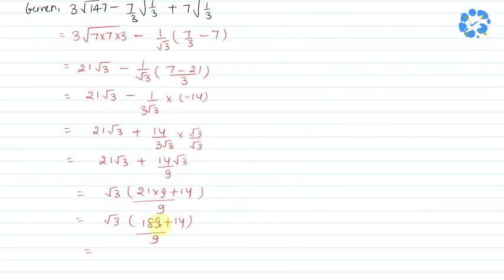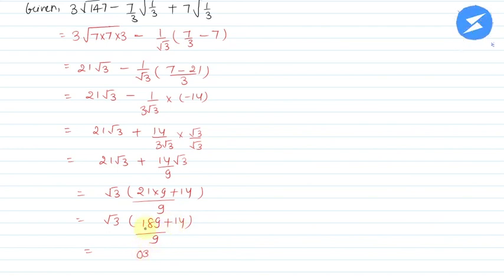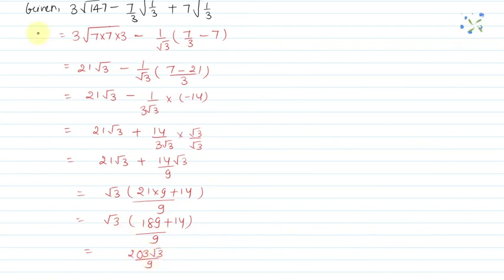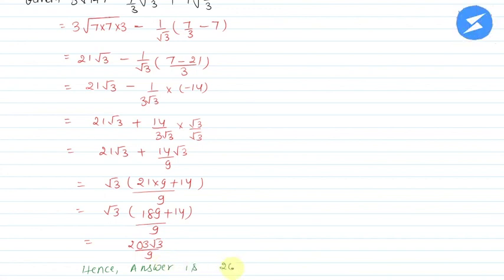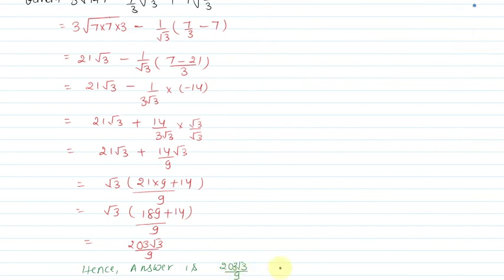So 189 plus 14 is 203. Therefore the answer is 203 root 3 upon 9. Hence, the answer is 203√3 / 9. I hope you understood this video. Thank you.